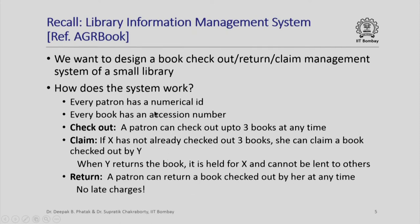Every patron would have a unique numerical ID, every book would have a unique accession number, and a patron can check out up to three books at any time. If a patron X has not already checked out three books, she is allowed to claim one book already checked out by some other patron Y, meaning when Y returns the book it would be held for X and not lent out to others. A patron can also return a book she had checked out earlier, and being a benevolent library, there were no late charges.